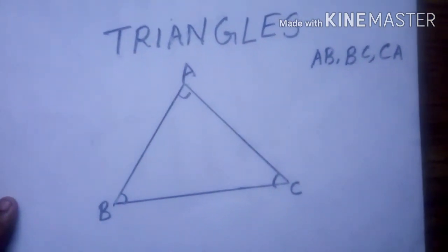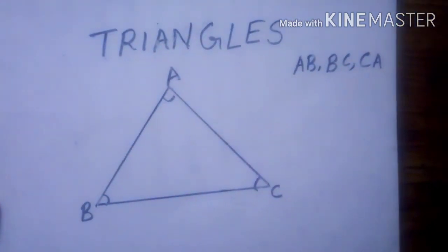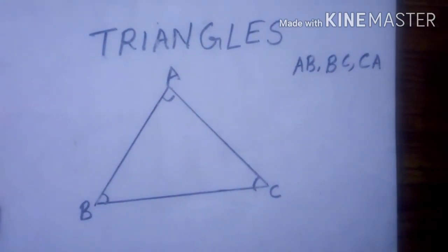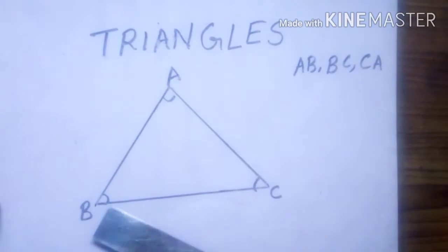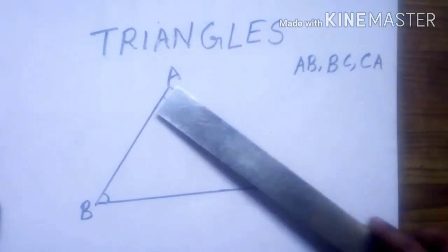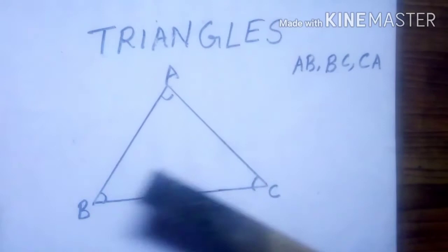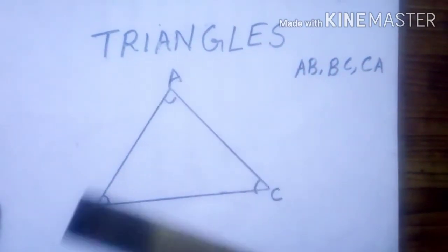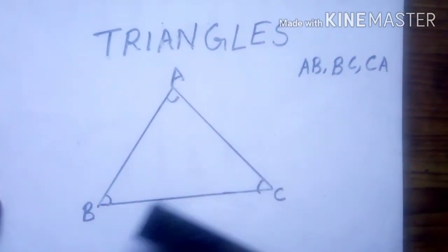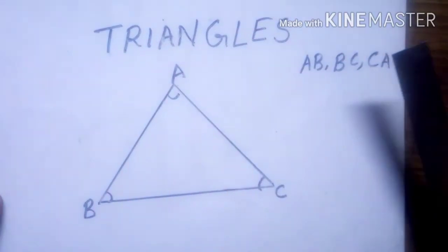A triangle is a polygon made of three line segments. When the three line segments A-B, B-C, and C-A join together, it forms a triangle. In a triangle, there are three line segments.